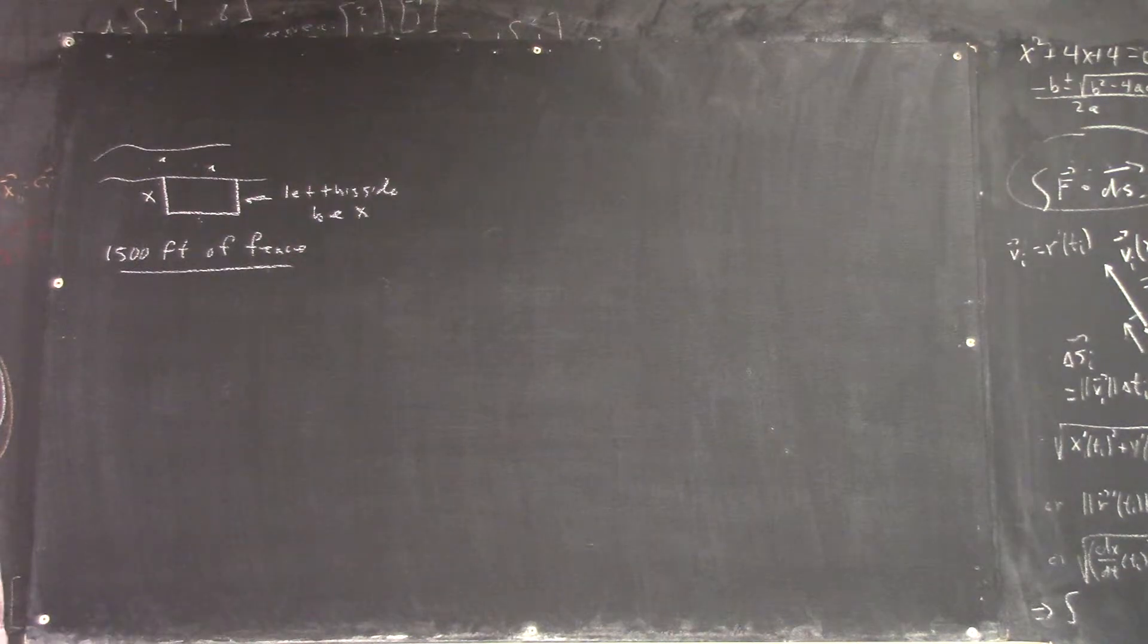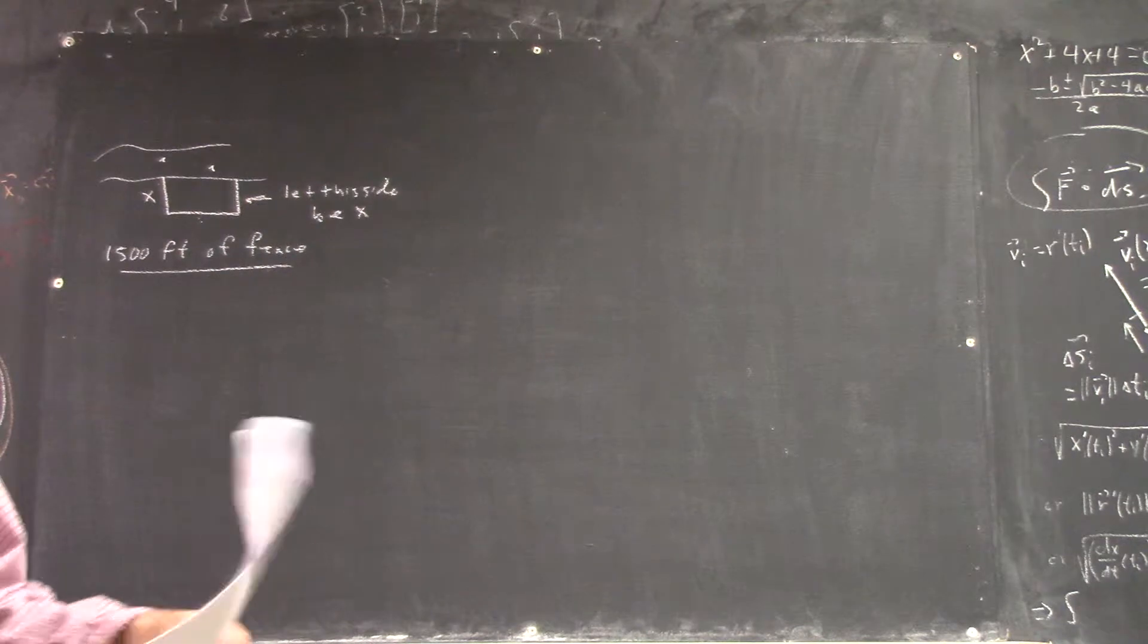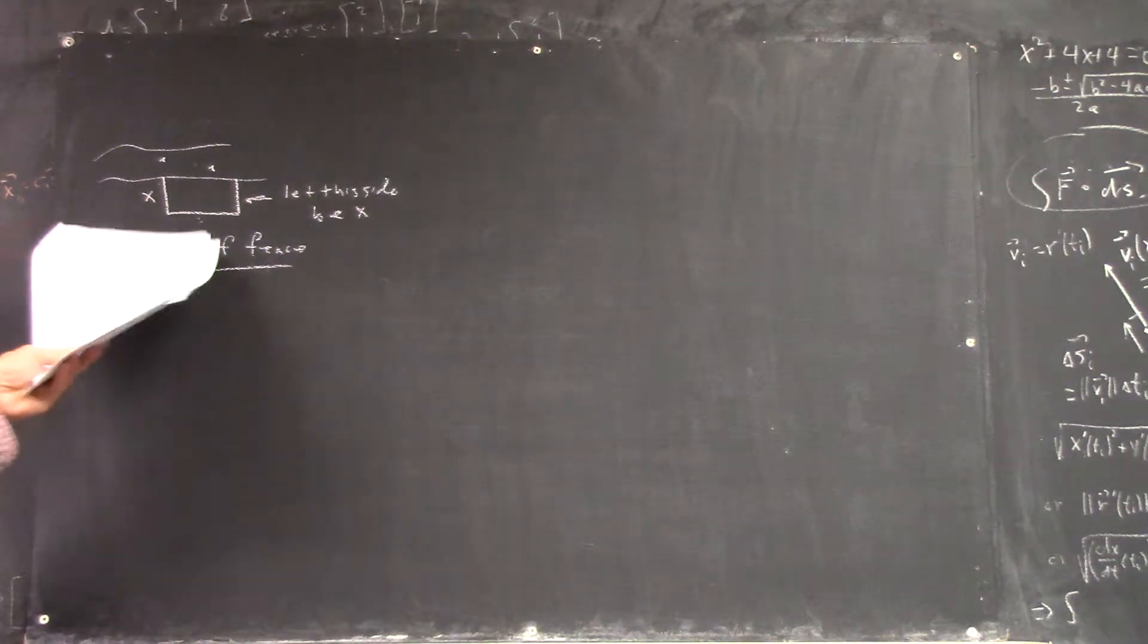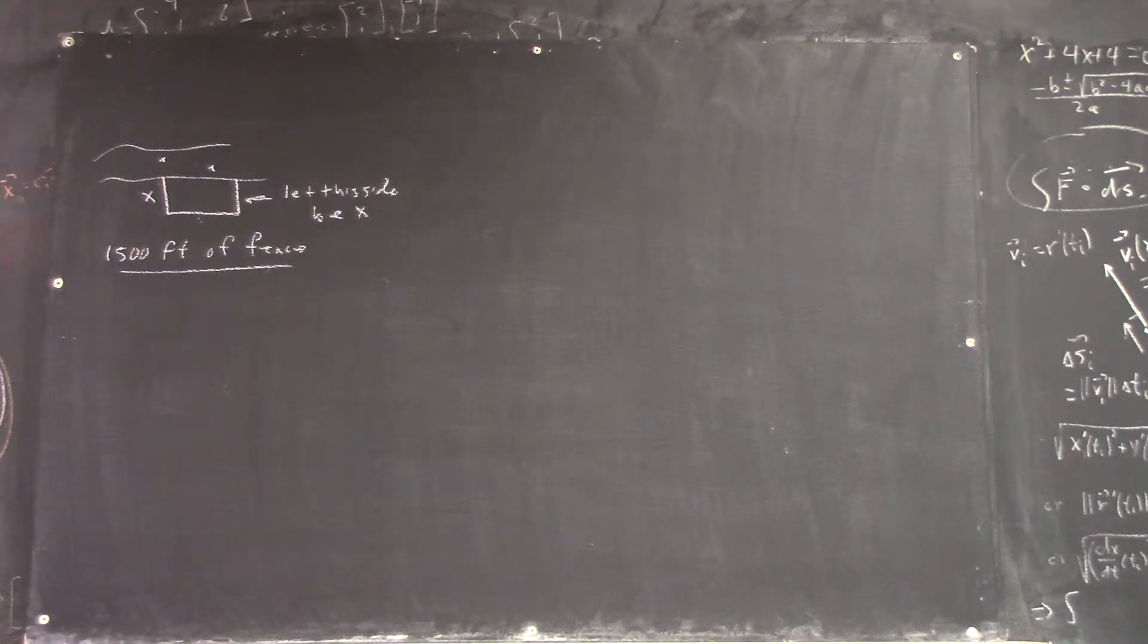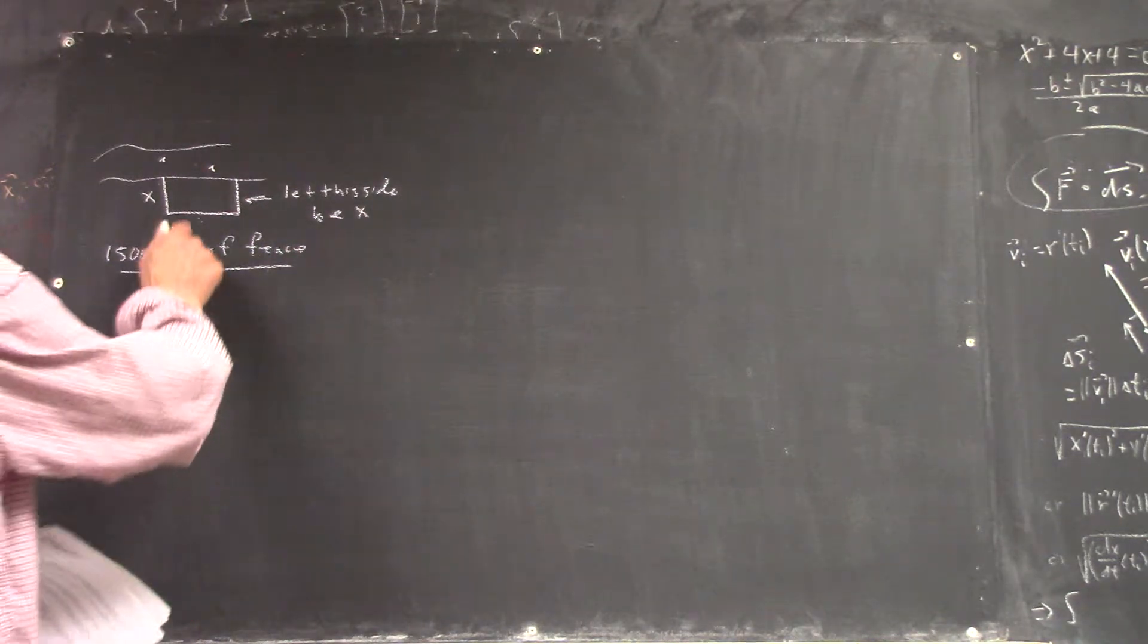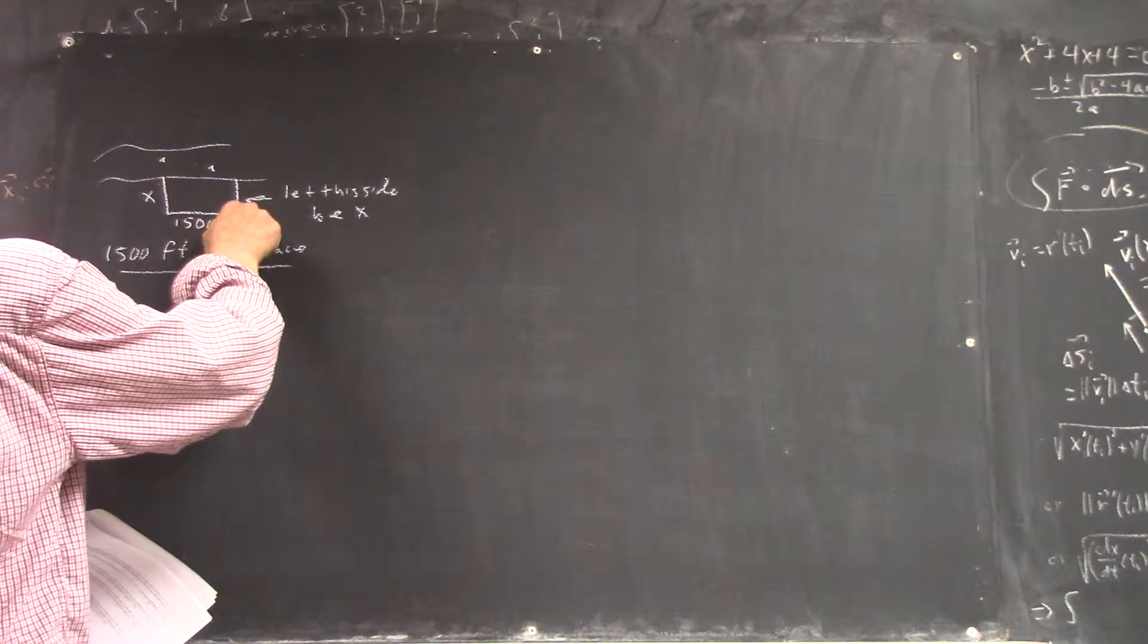How much have you used on those two sides? X. Well, two x. Two x. You got two sides of x. So, what do you got left here? Fifteen hundred feet minus two x? Yeah, so it's got to be fifteen hundred minus two x.